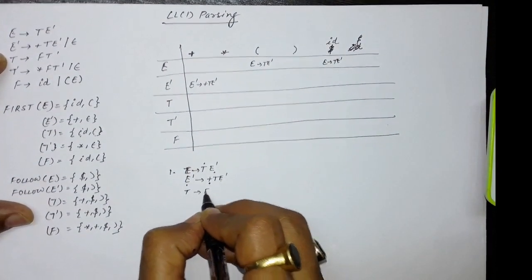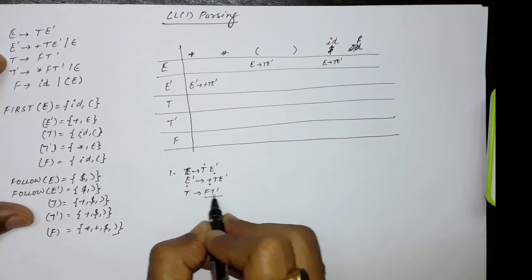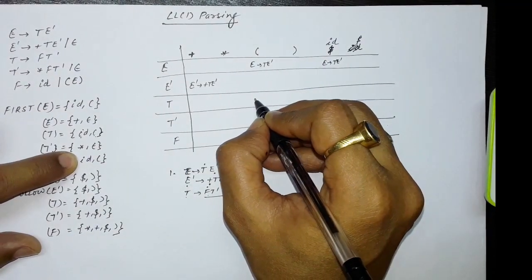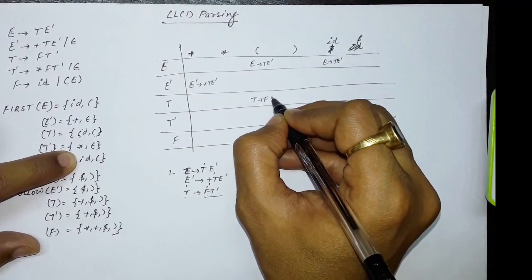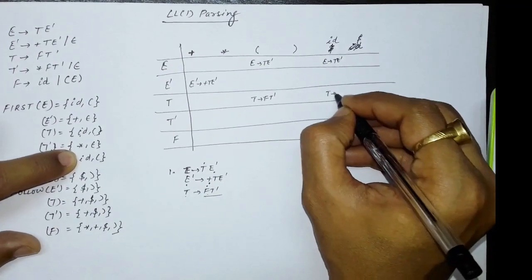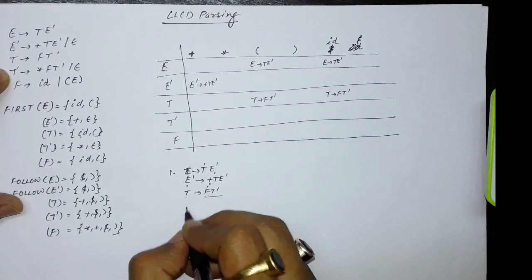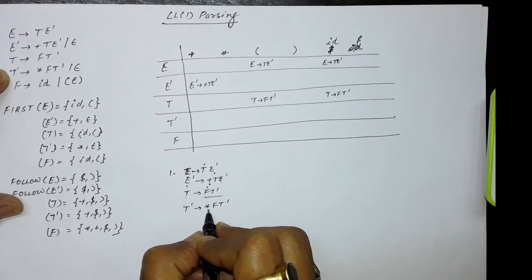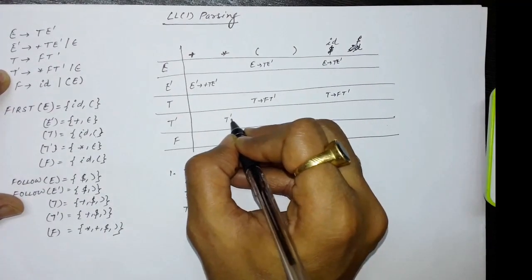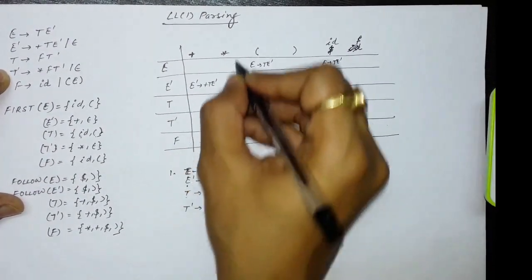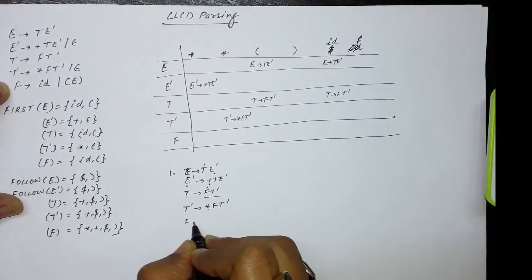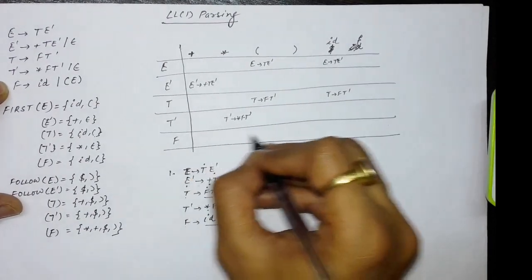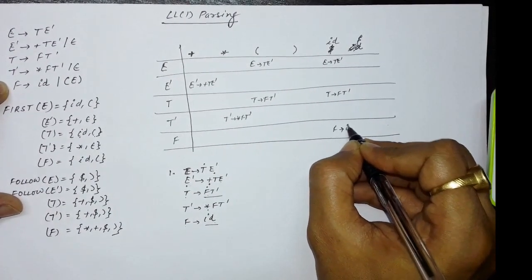The next production is T → FT'. Find the first of the right-hand side — first of F contains ID and opening parenthesis. So T → FT' will be written in the T row under ID and opening parenthesis columns. Next, T' → *FT': first of the right-hand side is star, so T' → *FT' is written in the T' row and star column. Next, F → id will be written in the F row under the ID column.